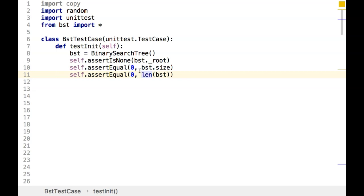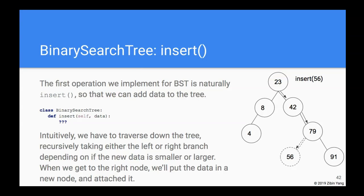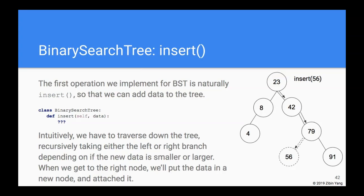The first thing we want to do after the initializer is put something into the data structure, so we'll implement the insert method. The signature is just: given a piece of data, insert it into the tree. At a high intuitive level, we have to stick to the BST invariant — anything on the left is smaller, anything on the right is bigger.